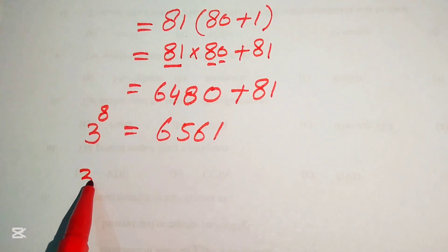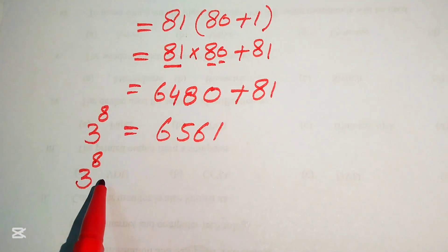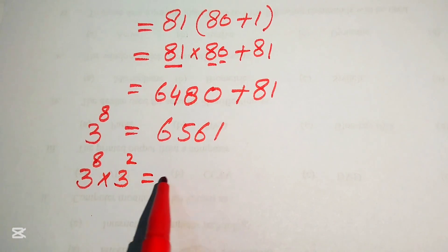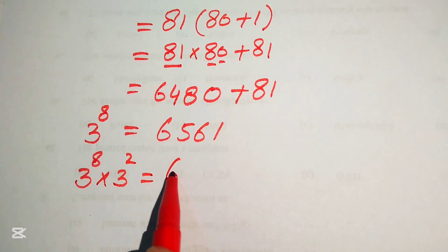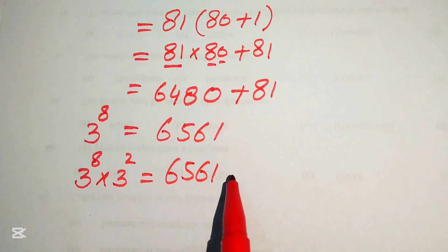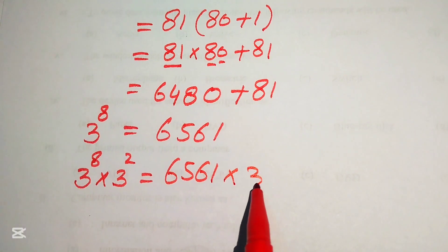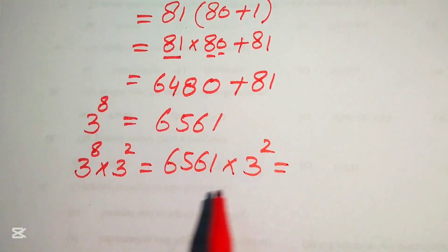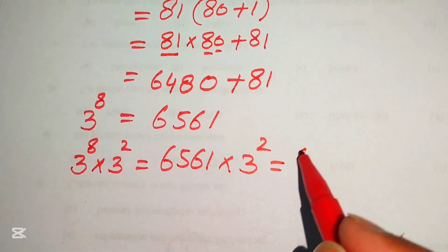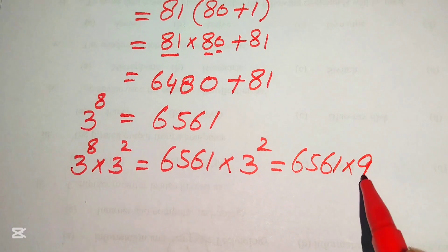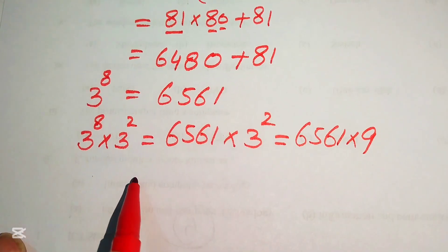To find the value of 3 to the power of 10, we multiply both sides by 3 squared. So it is written as 6561 multiplied by 3 squared, and 3 squared equals 9, giving us 6561 multiplied by 9.